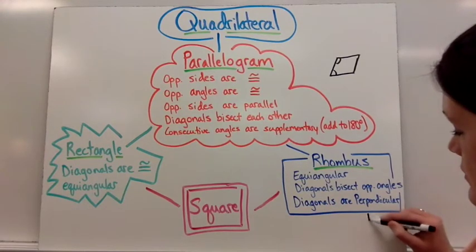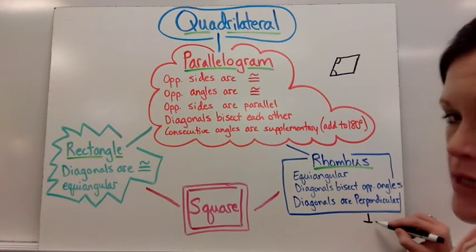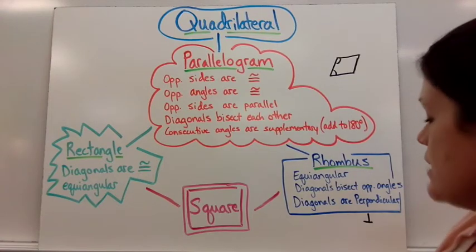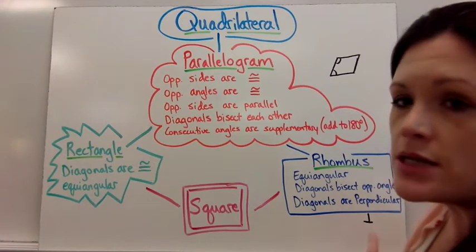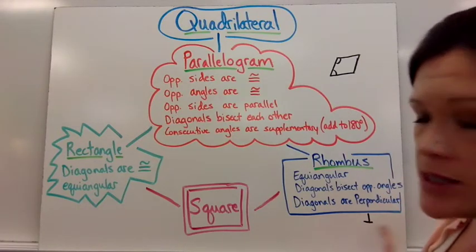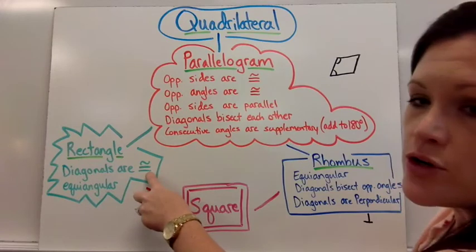The symbol for perpendicular, you sometimes see it written sort of like an upside down T. So that's what they mean when they say perpendicular. Mathematicians like to write words as symbols a lot of times. So don't get thrown off if they use symbols. That is the symbol for congruent.